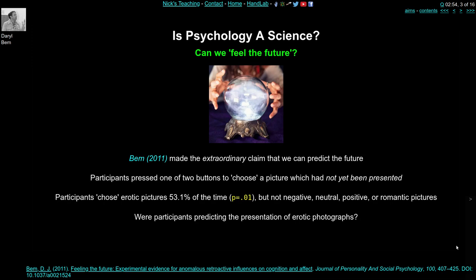Bem was trying to investigate extrasensory perception — predicting the future — and he simply reversed the order of presentation. He first asked people to make a choice: push one of two buttons, left or right. Based on that choice he would then show them a picture. At the time they made the decision they didn't know what the two possible pictures were going to be, so they just chose left or right and then a picture would follow.